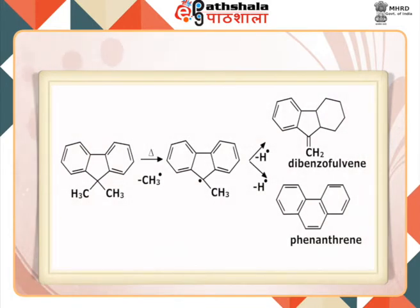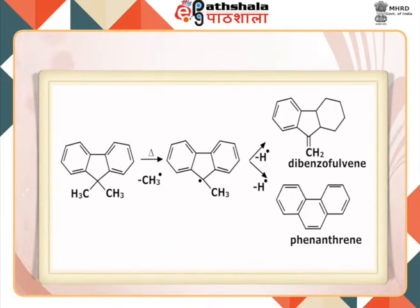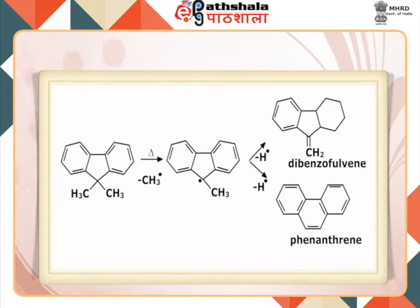Free radical elimination can be followed by rearrangements. For example, in 9,9-dimethylfluorene, there is first removal of the CH3 radical, giving a radical at that position. From this radical, removal of a hydrogen radical gives an exocyclic double bond, or a rearrangement can occur followed by hydrogen radical removal, giving the aromatic phenanthrene system.